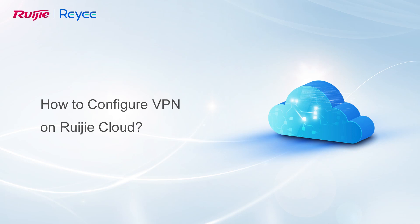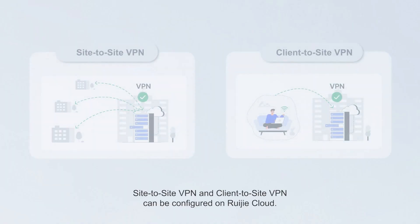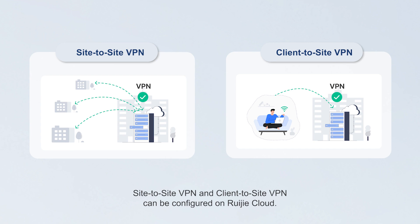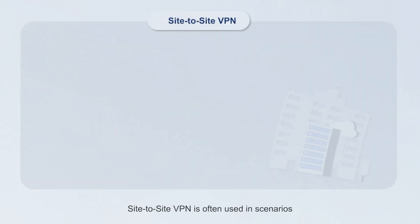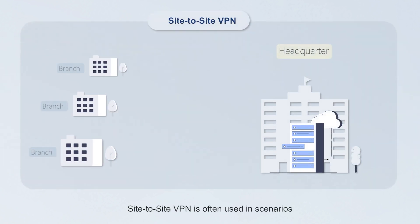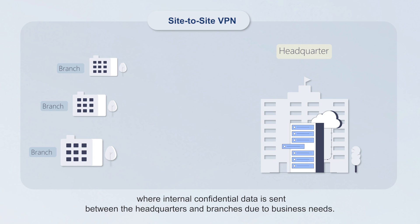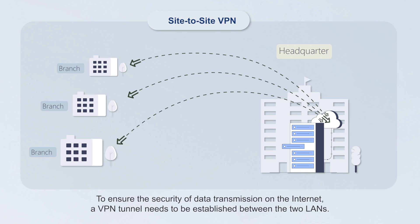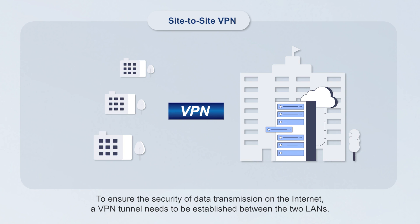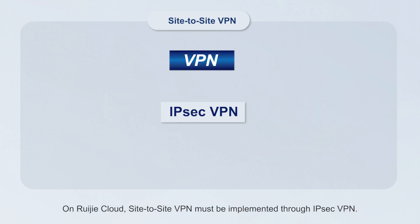This video covers how to configure VPN on Wegea Cloud. Site-to-site VPN is often used in scenarios where internal confidential data is sent between headquarters and branches due to business needs. To ensure the security of data transmission on the internet, a VPN tunnel needs to be established between the two LANs. On Wegea Cloud, site-to-site VPN must be implemented through IPsec VPN.